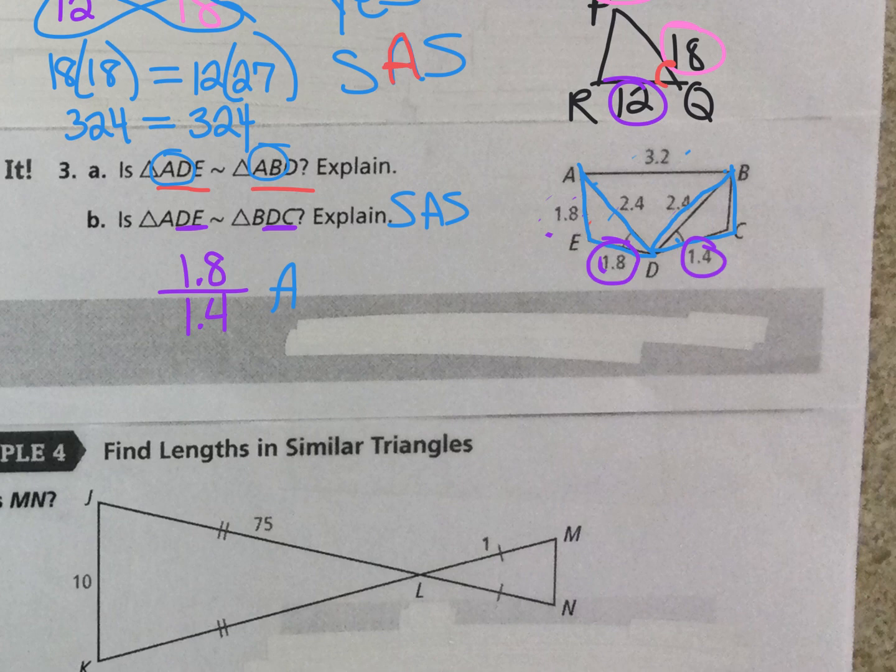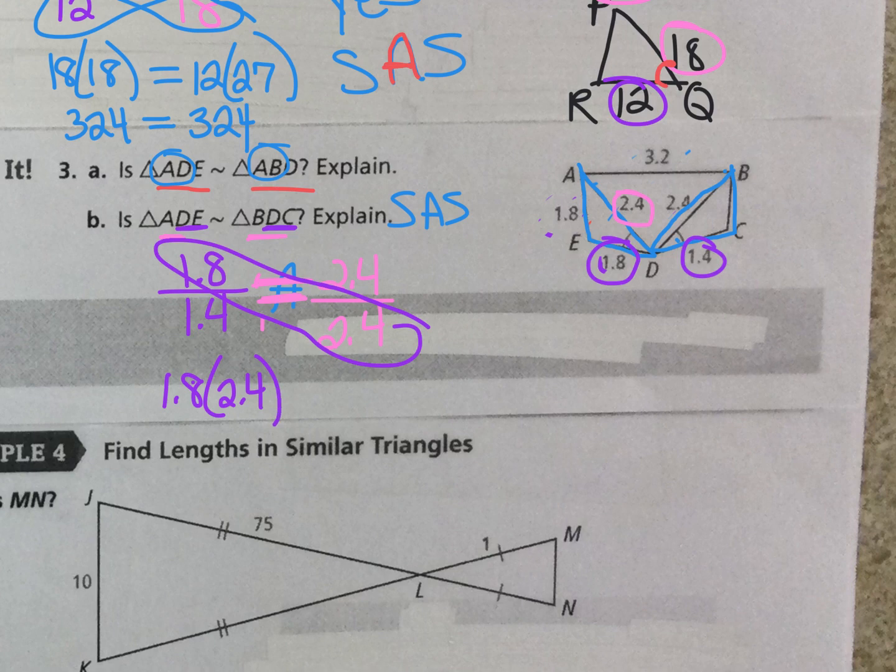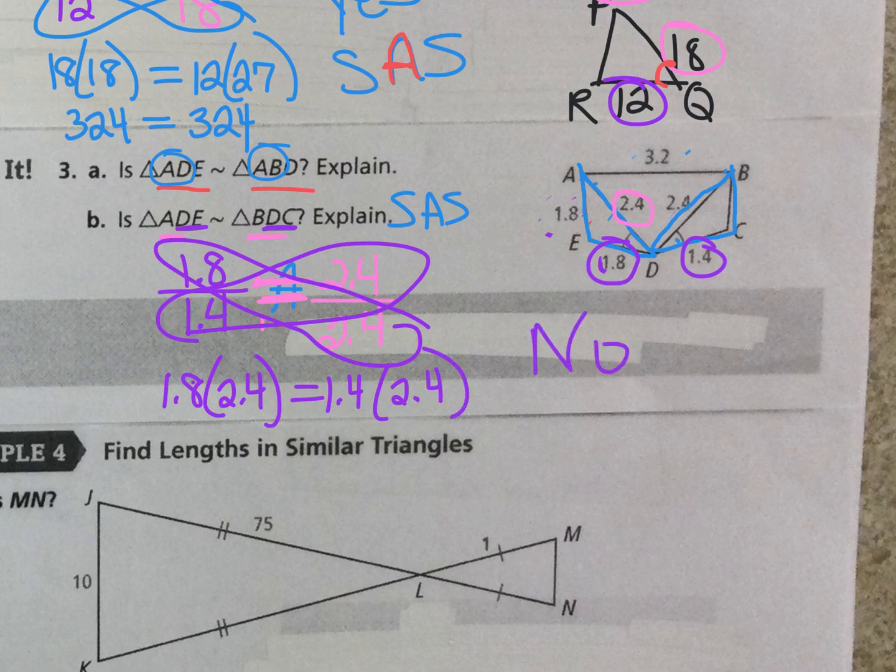So I'm just going to check these proportions. I don't need that angle there. I'm going to set them equal together and see. If I cross multiply this, I get 1.8 times 2.4. If I cross multiply this, I get 1.4 times 2.4. And I know that doesn't work. So no, those are not similar.